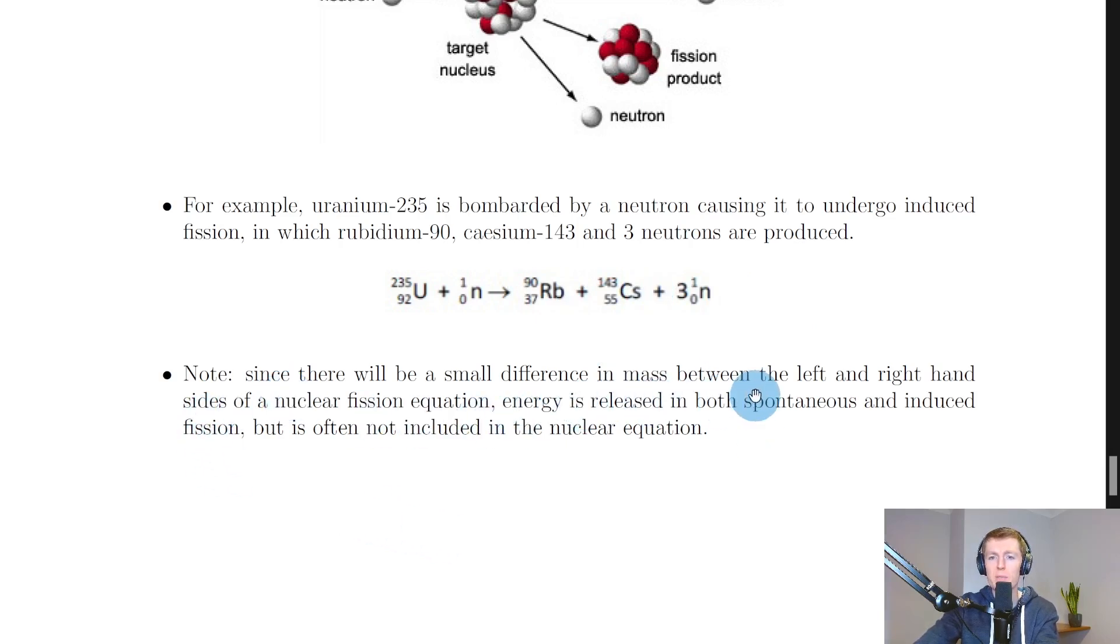Lastly, it says to note that since there will be a small difference in mass between the left and right-hand sides of our nuclear fission equation, energy is released in both spontaneous and induced fission, but it's often not included in the nuclear equation. So remember it's the energy released in nuclear fission reactions that can go on and heat up water to produce steam, which can drive turbines and then an electrical generator to produce electricity. So it's really the energy that's produced from these reactions that is important.